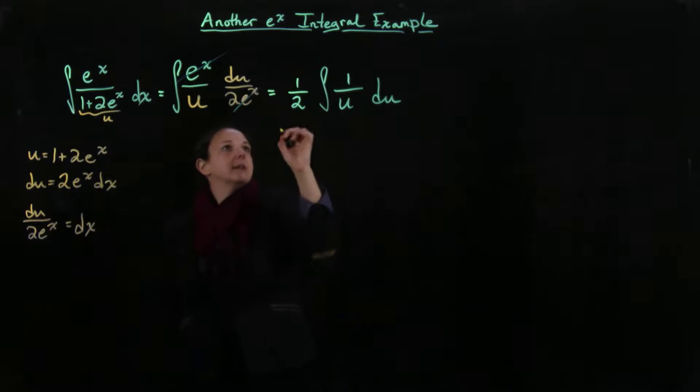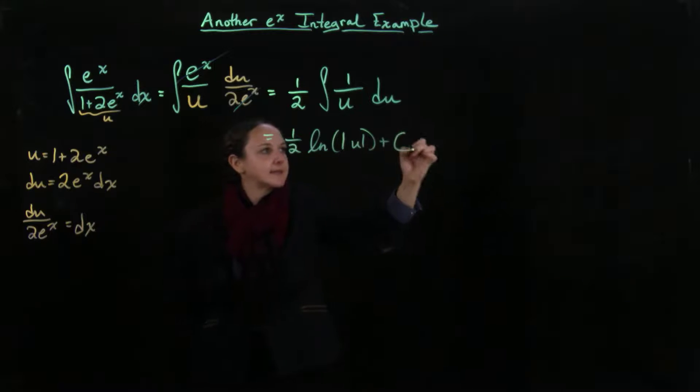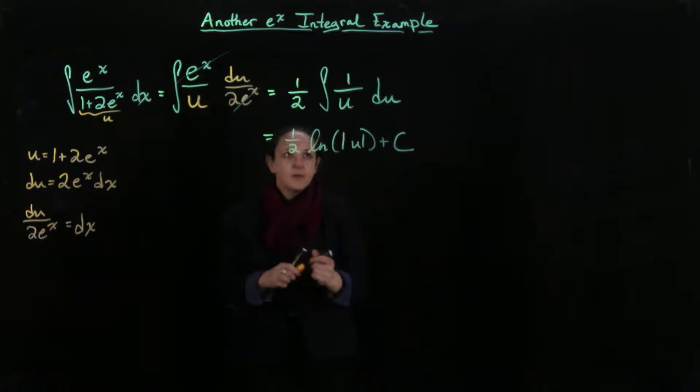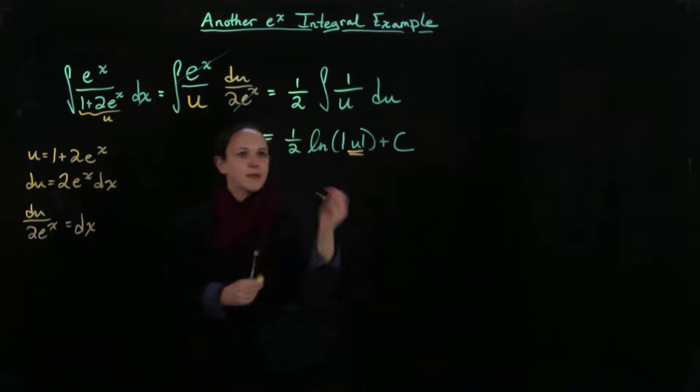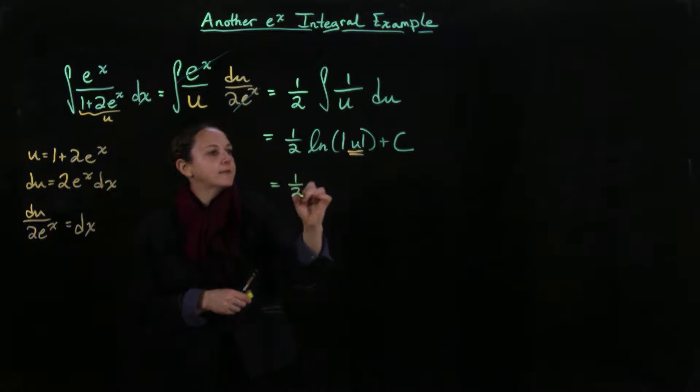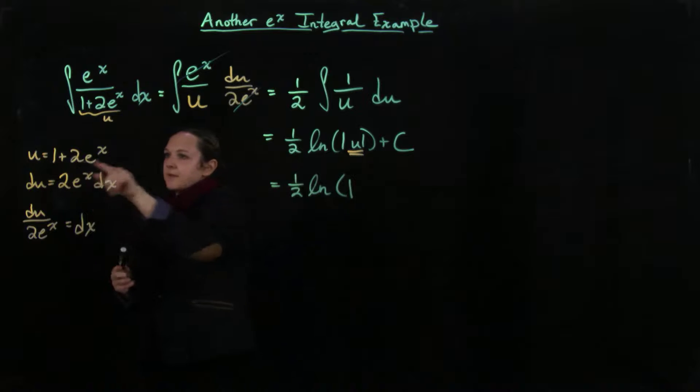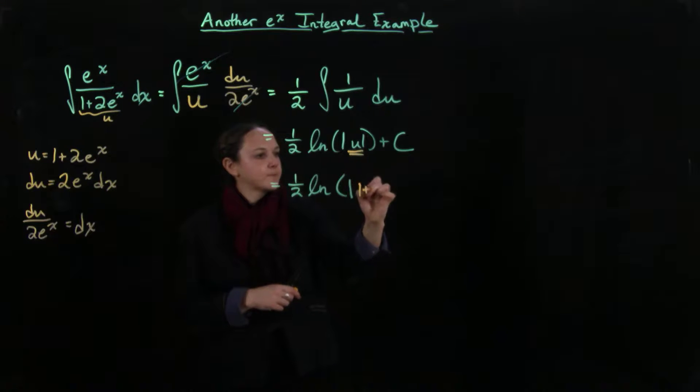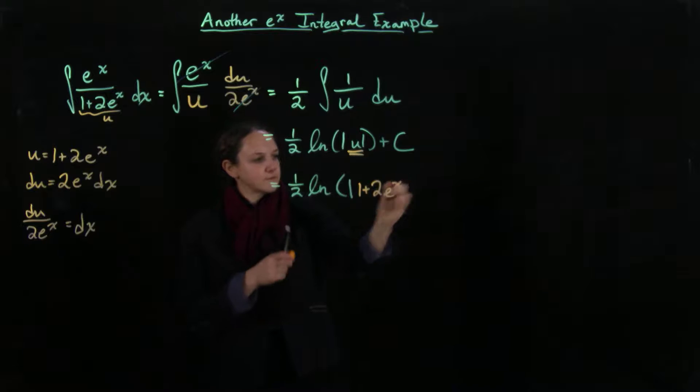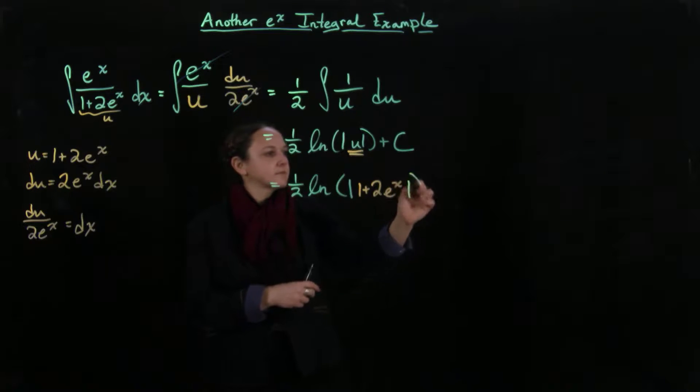So let's just go ahead and integrate this. This is going to equal 1 half times the natural log of, and then we go ahead and put that in. So it's going to be 1 plus 2 e to the x plus c.